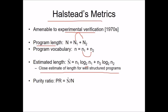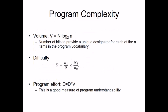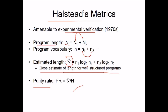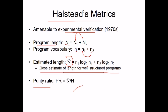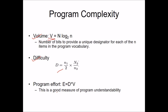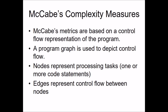The purity ratio is the estimated length divided by the total program length. Program volume V = N · log₂(n) — the number of bits needed to provide a unique designator for each operator and operand in the program vocabulary. Difficulty D = (n1/2) · (N2/n2). Program effort E = D × V, and this is a good measure of program understandability.